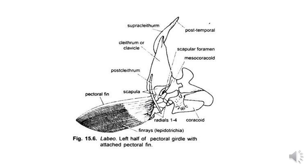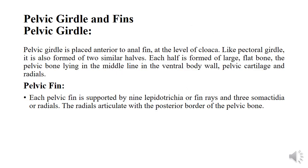Here is the diagram of the pectoral girdle. Next is the pelvic girdle and fins. The pelvic girdle is placed interior to the anal fin at the level of the cloaca. Like the pectoral girdle, the pelvic girdle is also formed of two similar halves, and each half is formed of pelvic bone and pelvic cartilage. The pelvic fin is supported by 9 lepidotrichia and three radials. These three radials articulate with the posterior border of the pelvic bone.